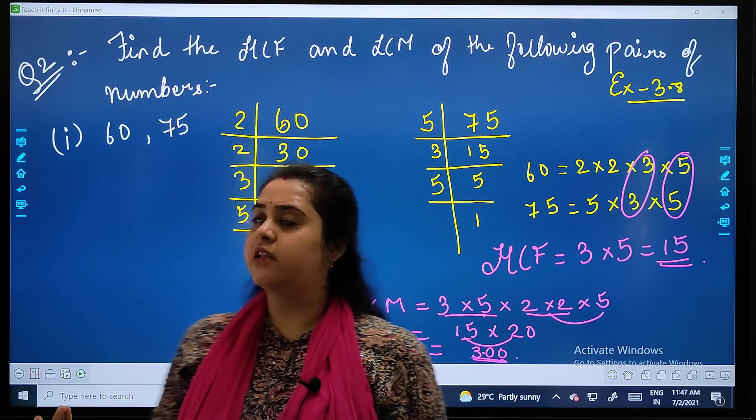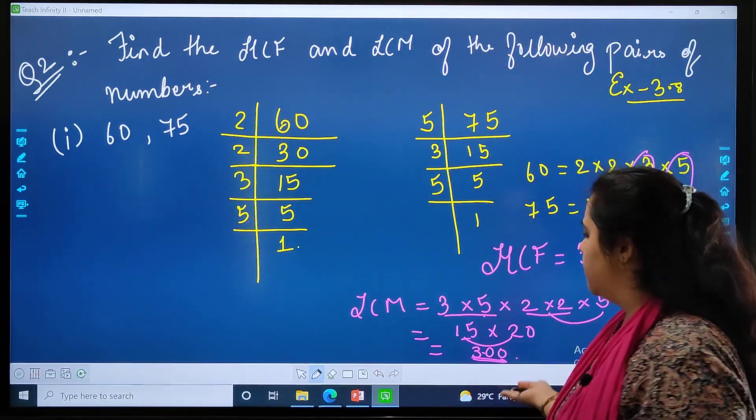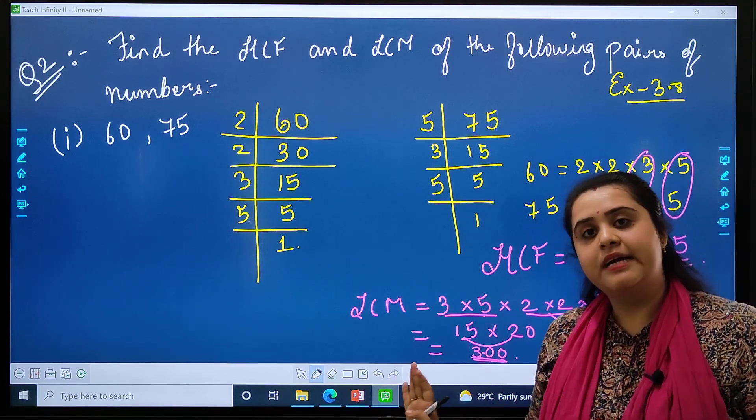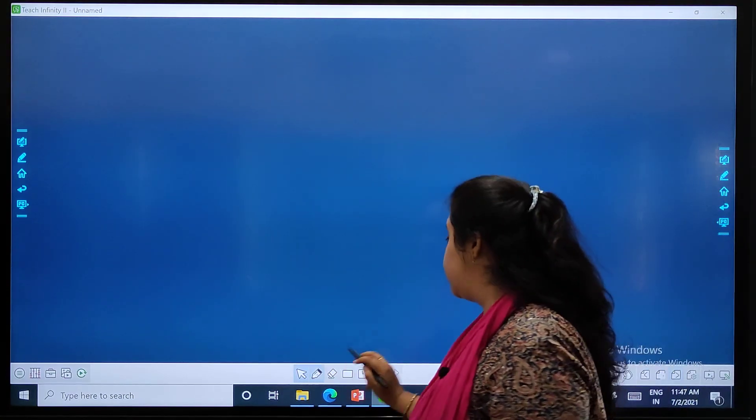What we have to find in this question? We were supposed to find HCF and LCM. We came to our solution. Done, easy. So let's move to question number 3.